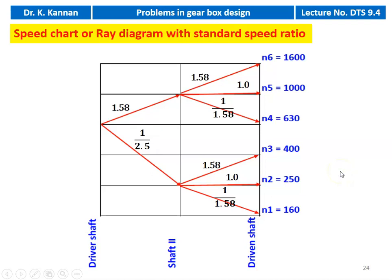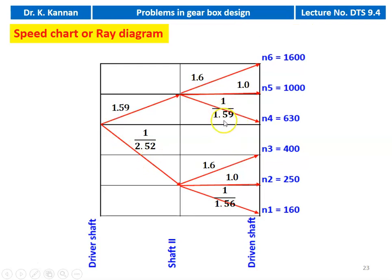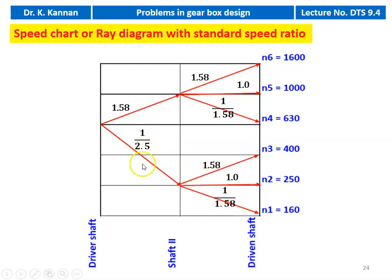We now standardize the speed ratios by converting them to standard values. Refer to PSG Design Data Book pages 8.6 to 8.12, where charts for standard speed ratios are available. The value 1.59 is changed to 1.58, 1.6 is changed to 1.58, and 2.52 is changed to 2.5. Using standard values makes it easier to select the number of teeth from the data book; otherwise, calculating the number of teeth independently is more difficult.